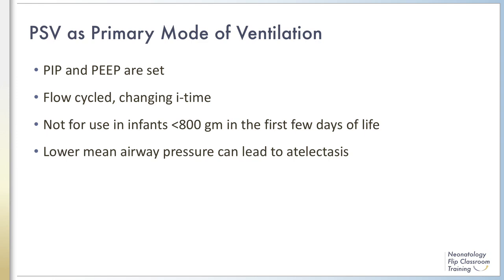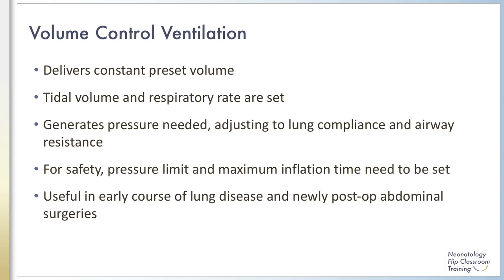In volume control ventilation, the ventilator delivers a constant preset volume. The clinician sets the tidal volume and respiratory rate, thereby directly controlling the minute ventilation. The ventilator generates the pressure needed to overcome lung compliance and airway resistance. The clinician needs to set a pressure limit and maximum inflation time as safety measures; the ventilator cycles to expiration once the preset volume has been reached, or when it has reached the maximum inflation time or maximum pressure. Volume control modes without a pressure limit can be dangerous during situations such as a mucus plug, right mainstem intubation, or a kinked endotracheal tube preventing the infant from receiving the set tidal volume — in these instances, the ventilator can continue to deliver increasing amounts of pressure as it tries to overcome the obstruction.